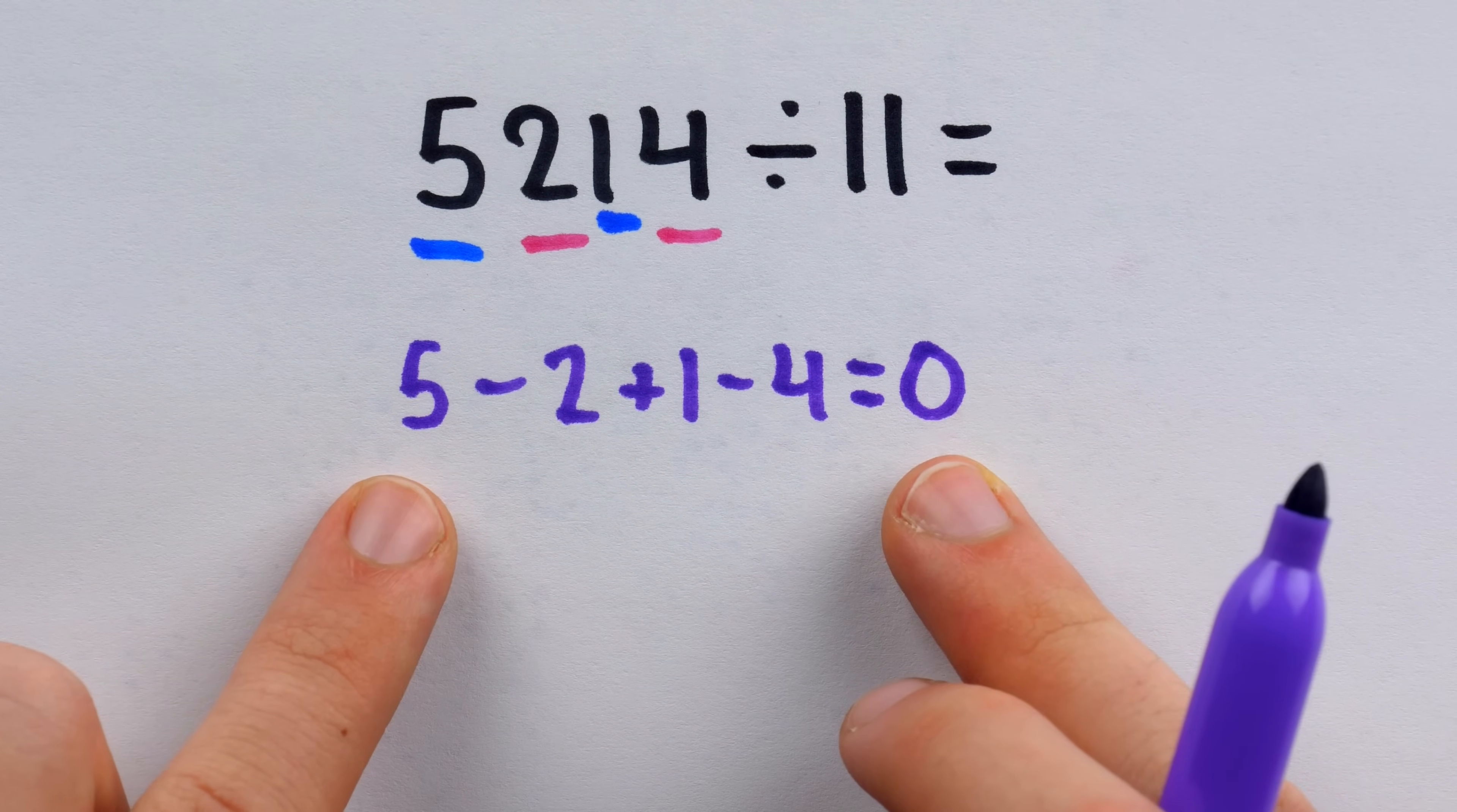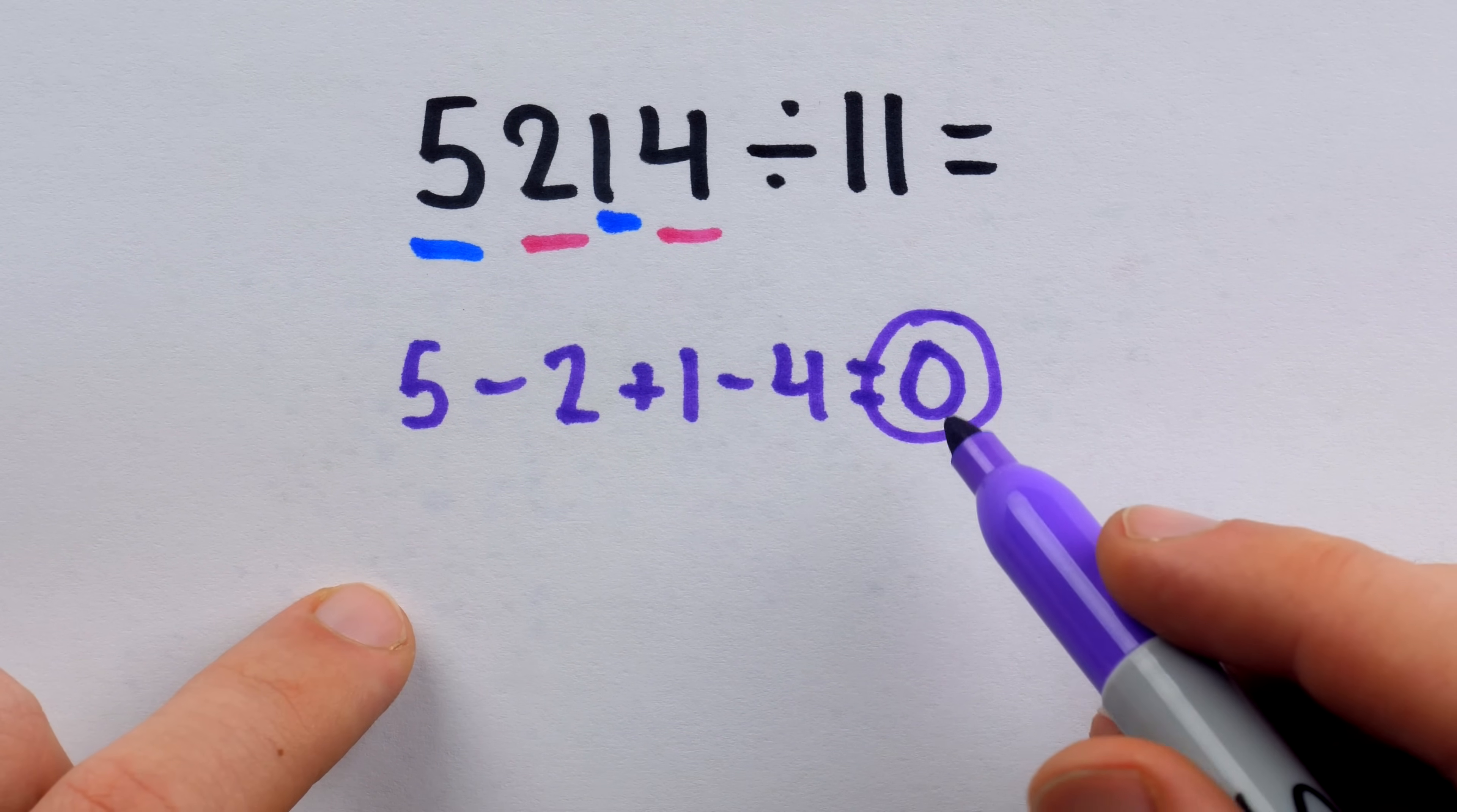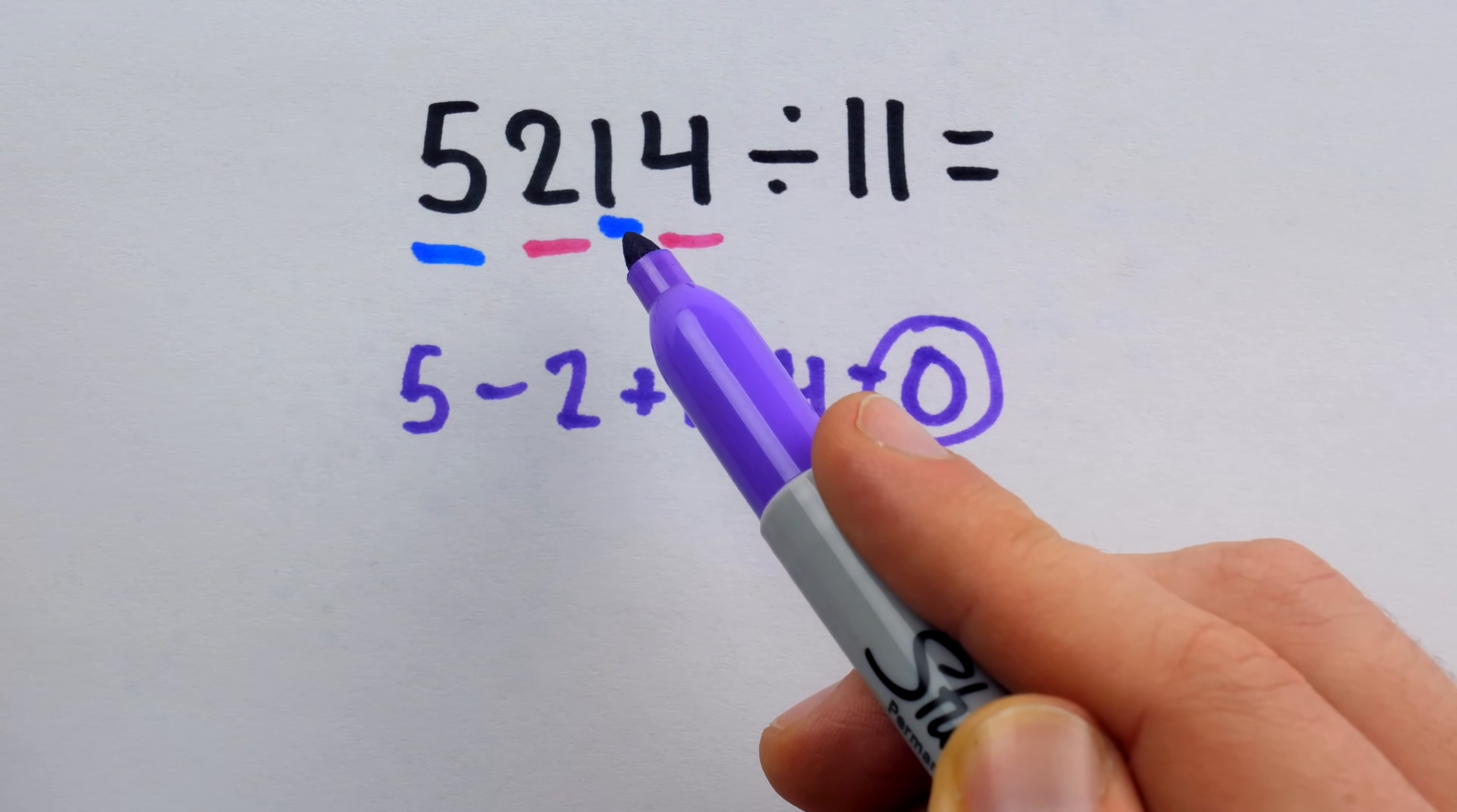And this is equal to 0. So when you do this alternating sum, you just have to check if the result is divisible by 11 or not. In this case, the result is indeed divisible by 11. 0 is the 0th multiple of 11. So indeed, 5,214 divided by 11 will be a whole number because this number is divisible by 11.